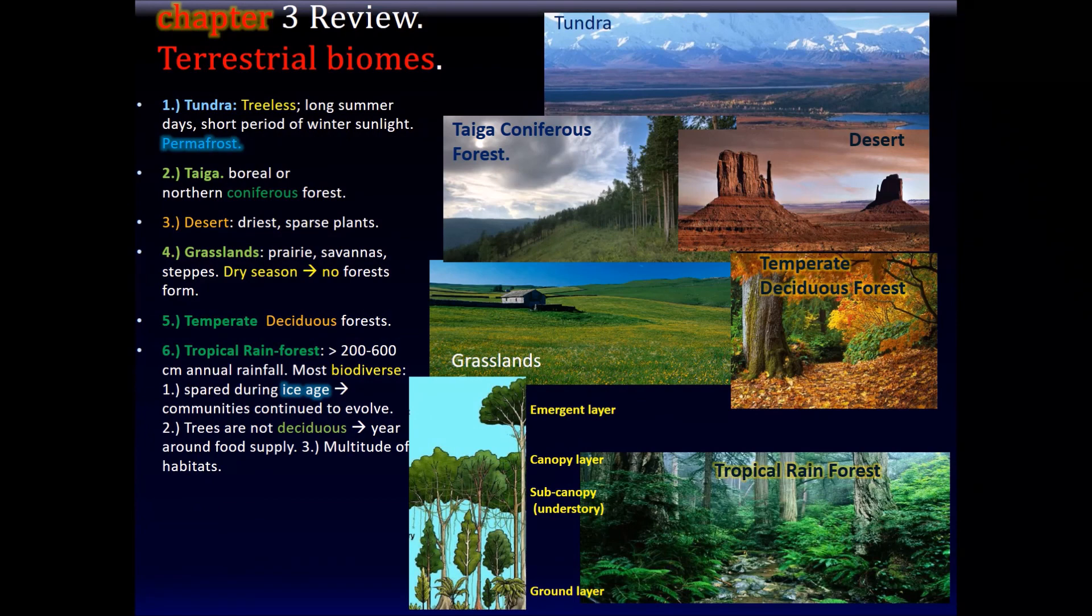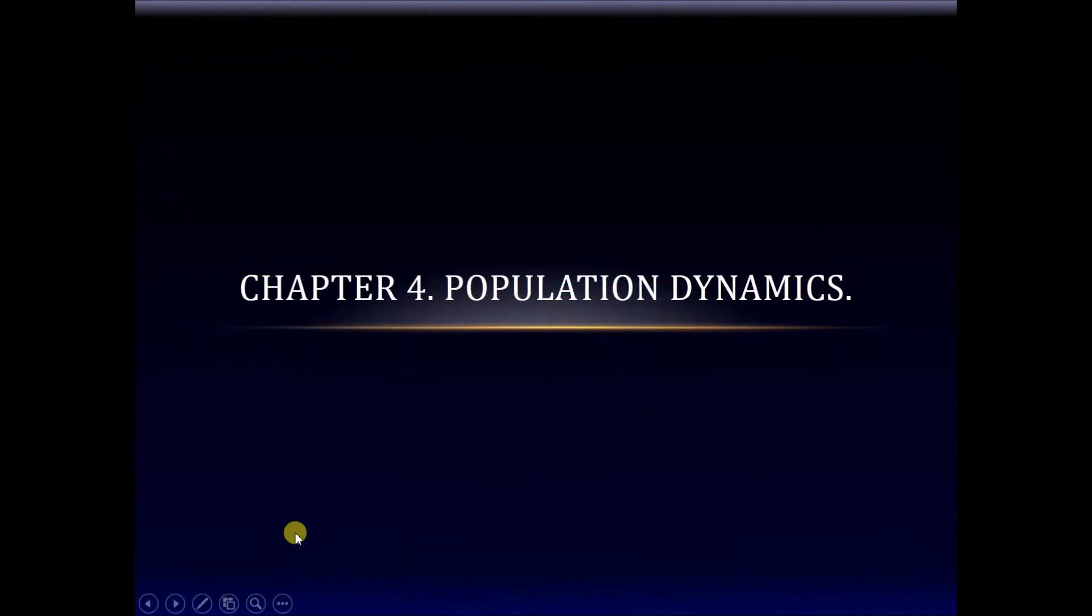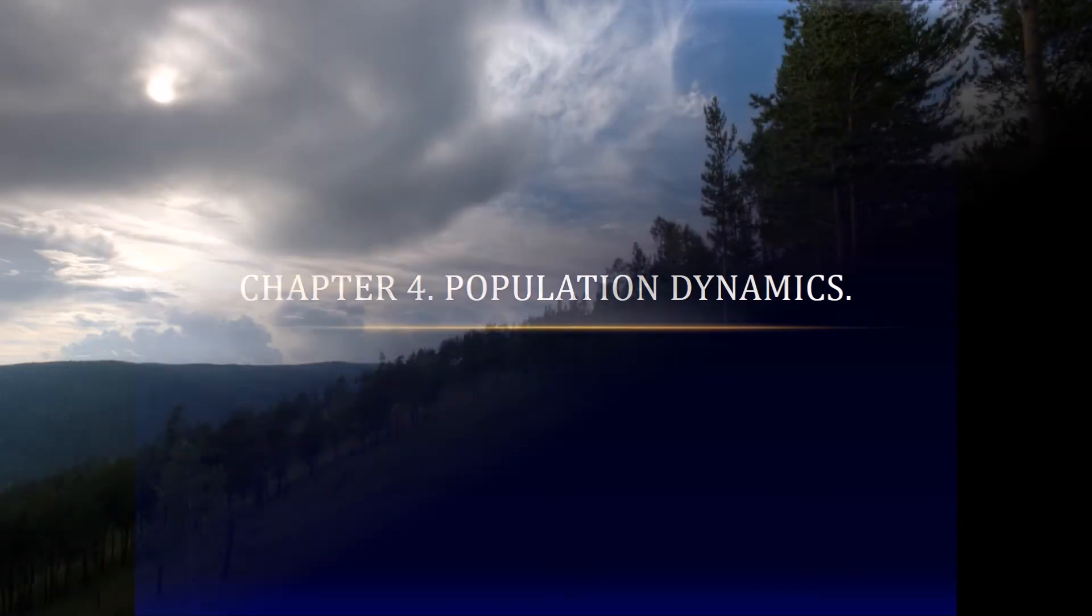So this is a summary slide. So we talked about different types of terrestrial biomes. We talked about the tundra, the taiga and the coniferous forest, the desert, the temperate deciduous forest, the grasslands, and the tropical rainforest. That's it! Until next time. Thank you.